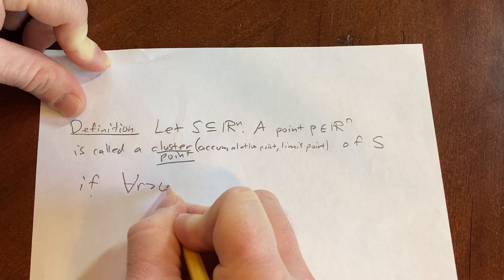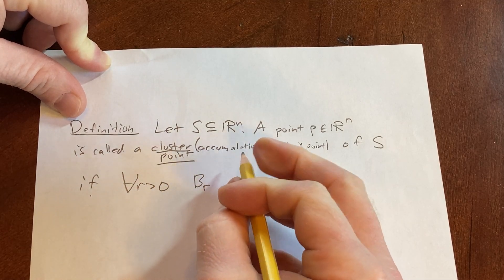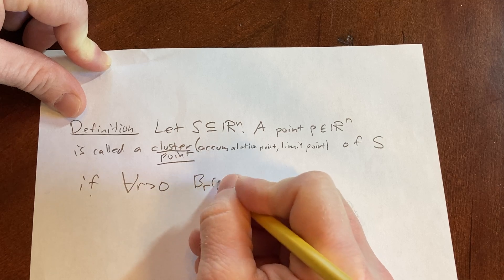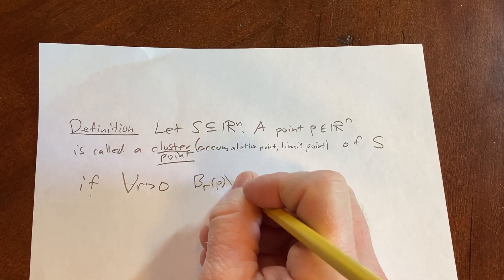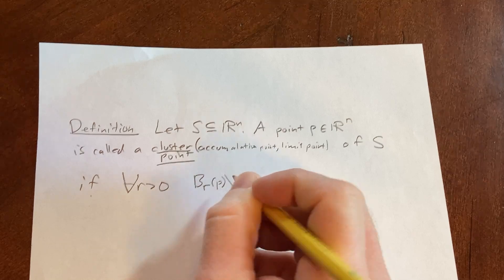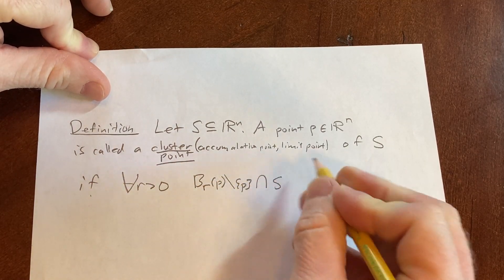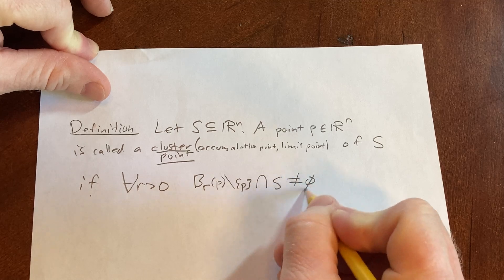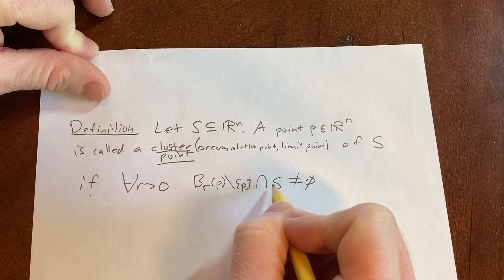if we look at the open ball of radius r around P and then we remove P—so P is in the middle but deleted—and you intersect that with S, it should be non-empty. In other words, you want points really close to P that are in that open ball and in S,